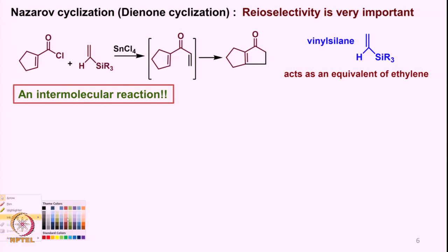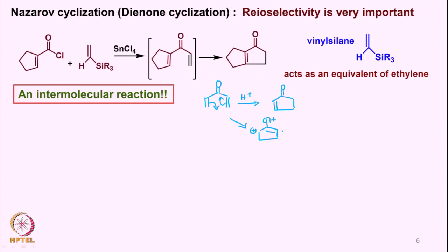Now we have very interesting examples of what is known as Nazarov cyclization or dienone cyclization. In these cases the regioselectivity is very important. In Nazarov cyclization, if we have a conjugated dienone — a diene conjugated with a ketone — when this undergoes cyclization in the presence of an acid (protic or Lewis acid), one can expect to get a cyclopentenone-type product. Basically, cyclization occurs to give an intermediate with a positive charge here, and then one gets the enone by loss of a proton.